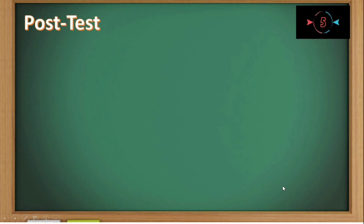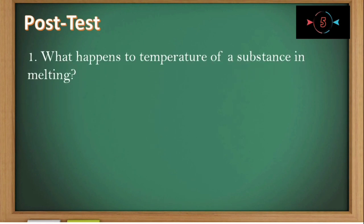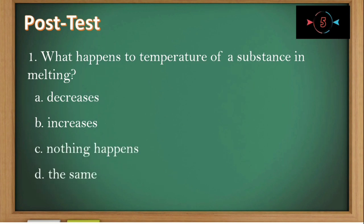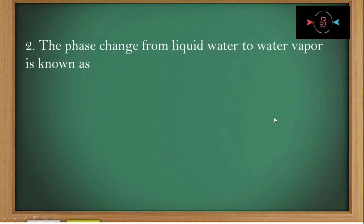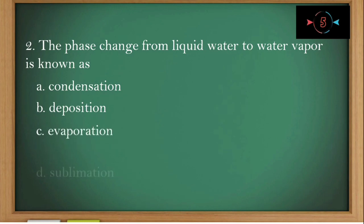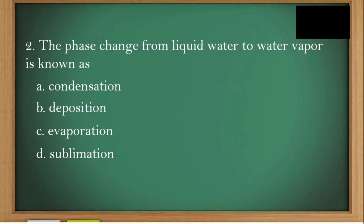Are you ready for your post-test? Number one: What happens to the temperature of a substance during melting? A, decreases. B, increases. C, nothing happens. D, the same. The correct answer is letter B. Number two: The phase change from liquid water to water vapor is known as — A, condensation. B, deposition. C, evaporation. D, sublimation. The correct answer is letter C.